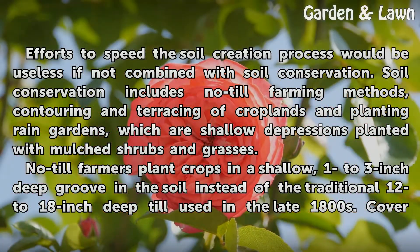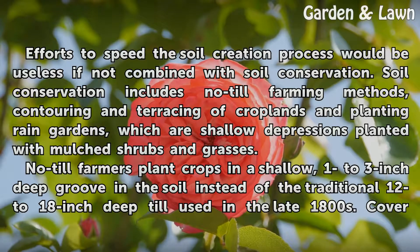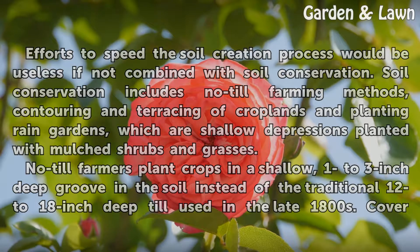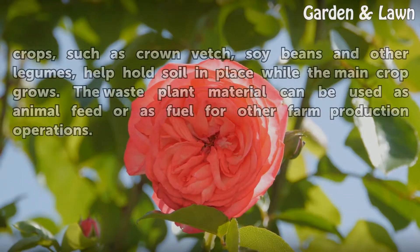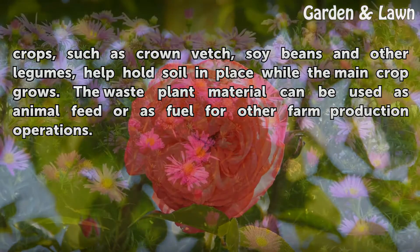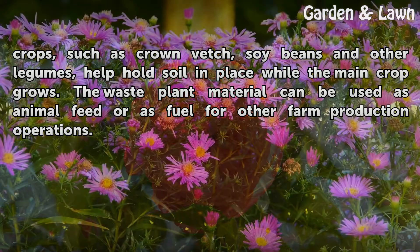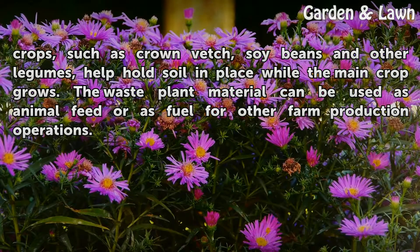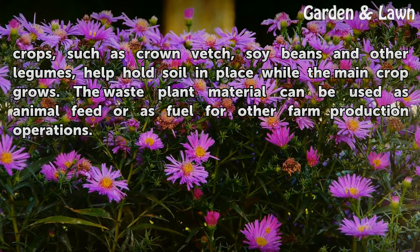No-till farmers plant crops in a shallow, one to three inch deep groove in the soil instead of the traditional 12 to 18 inch deep till used in the late 1800s. Cover crops, such as crown vetch, soybeans, and other legumes, help hold soil in place while the main crop grows. The waste plant material can be used as animal feed or as fuel for other farm production operations.